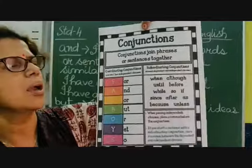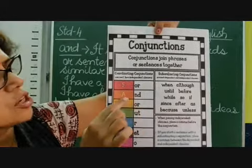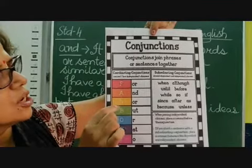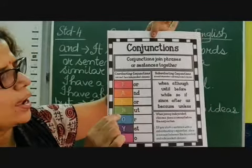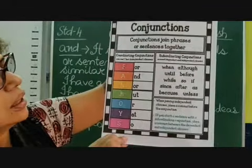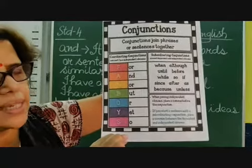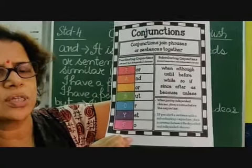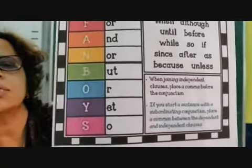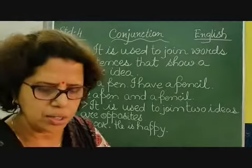Now why are they called FANBOYS? Because you take the first letter: F for 'for', that is a conjunction. A for 'and', also a conjunction. N for 'nor', that is also a conjunction. B for 'but', that is also a conjunction. O for 'or', that too is a conjunction. Y for 'yet', that is a conjunction. And the last one, S for 'so'. So all these conjunctions are called FANBOYS, and they are also called coordinating conjunctions.